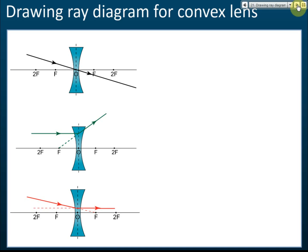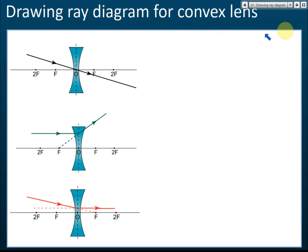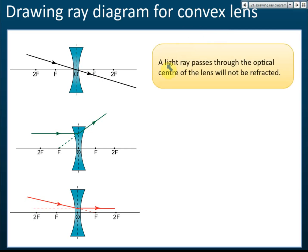Drawing a ray diagram for a concave lens — we have three rules. Rule number one: if a light ray passes through the optical center of the lens, it will not be refracted. This is the optical center. If the light ray passes through the optical center, there is no refraction.